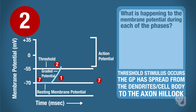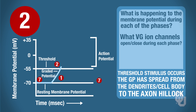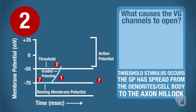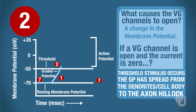You need to understand what's happening to the membrane potential during each of the phases — is it becoming more positive or more negative — and how that depends on the voltage-gated ion channels. If the voltage-gated ion channels are open, how does that change the membrane potential, and if they're closed, does it change the membrane potential? Ions like potassium and sodium can only be permeable if their voltage-gated channels are open. What causes voltage-gated channels to open? A change in the membrane potential. And consider the case where a voltage-gated channel is open but current is zero — meaning there is no ion movement through that channel.